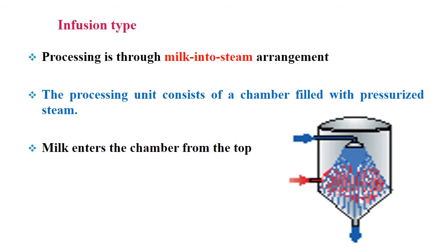Here is another type of direct heating system — the infusion type. In this case, processing is through a milk into steam arrangement, so steam is already present in the chamber and milk is passed into it. The processing unit consists of a chamber filled with pressurized steam. The milk enters the chamber from the top, gets exposed to the steam, gets heated and sterilized, and then exits through the outlet.